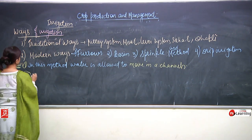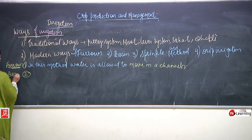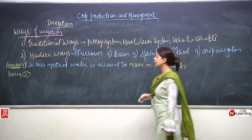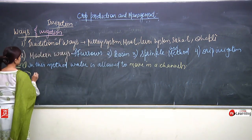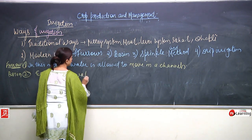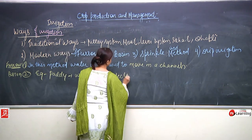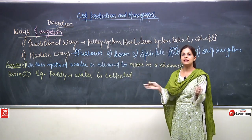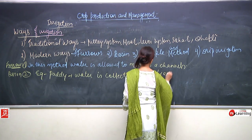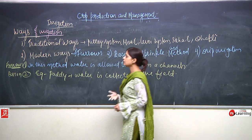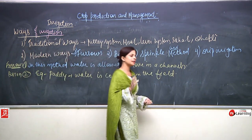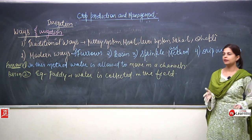Second is the basin method. In basin, water is allowed to be collected - it gets stagnant in the field. The example is paddy: water is collected in the field because some crops like paddy need continuous water and more of it. The water stands in the field with the crops.